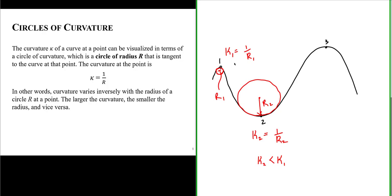Now let's look at point three — a circle that's kind of in between the circles drawn for points one and two. Point three has a circle of radius r three drawn there, and so it has a curvature given as one over r three.